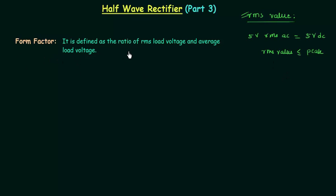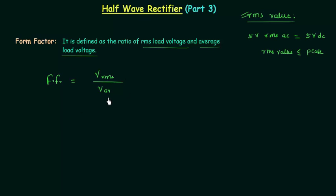Form factor is defined as the ratio of RMS load voltage and average load voltage. So the form factor is equal to V_RMS, the RMS load voltage, divided by V_average. Form factor is used to give information about the waveform, but nowadays it is not mostly used.